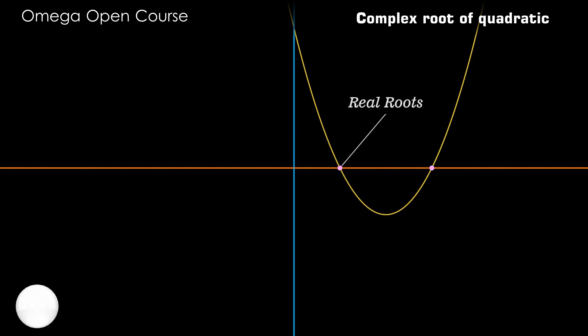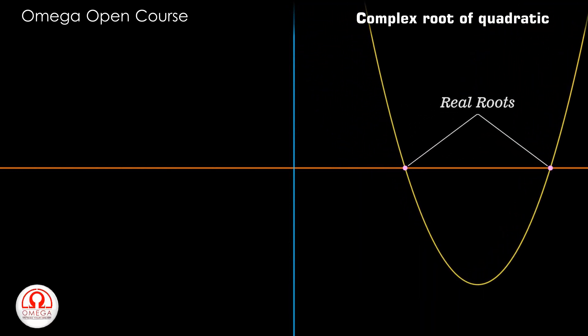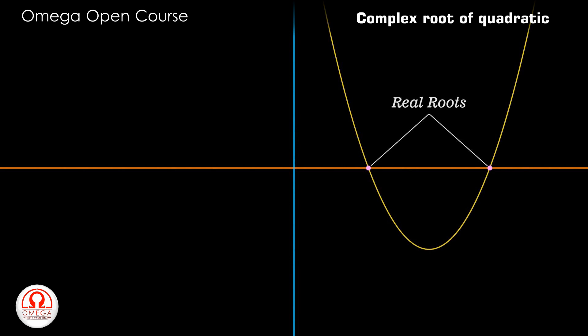If the parabola intersects or touches the x-axis then it has real roots and the real roots are the point of intersection or the point of contact of the parabola and the x-axis.